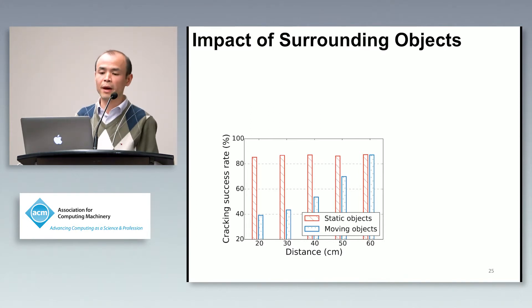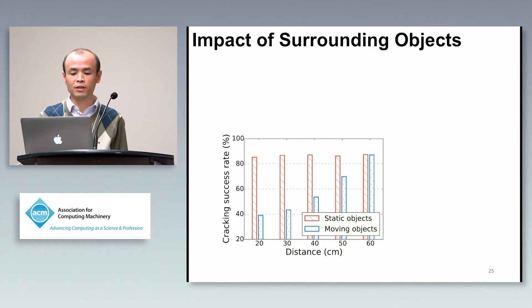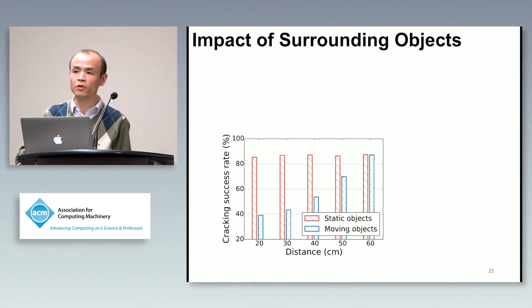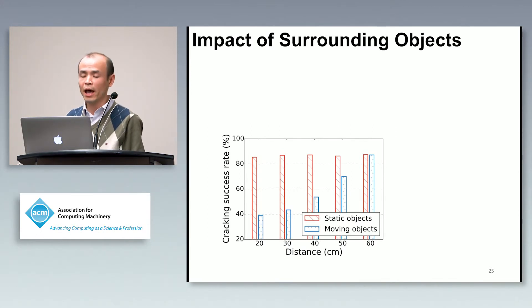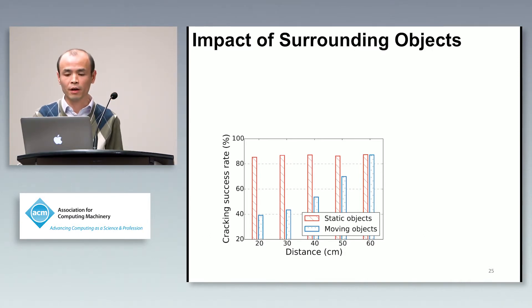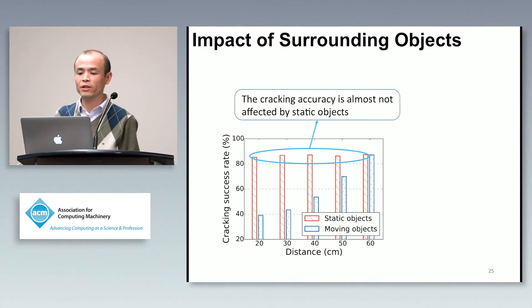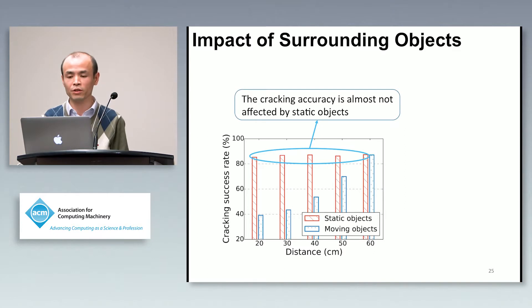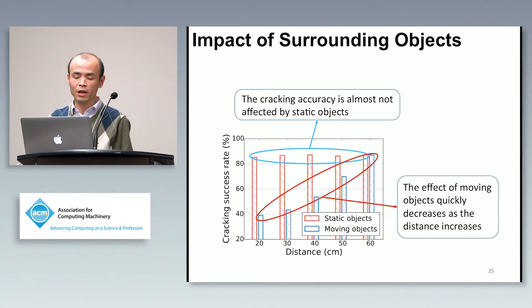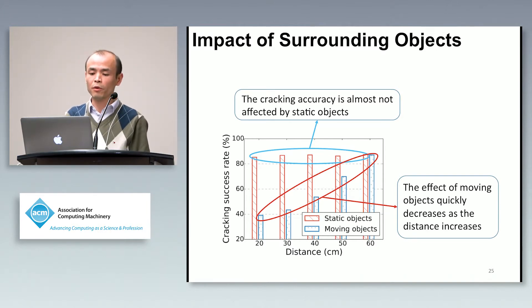We also evaluate the impact of surrounding objects. In this experiment, we have two types of objects: static objects — where we place hands near the phone and evaluate if they impact accuracy — and moving objects, where we move hands around the phone. We observe that cracking accuracy is almost not affected by static objects, but is indeed impacted by moving objects. However, as the distance between the moving objects and the phone increases, the effect of the moving objects quickly decreases.